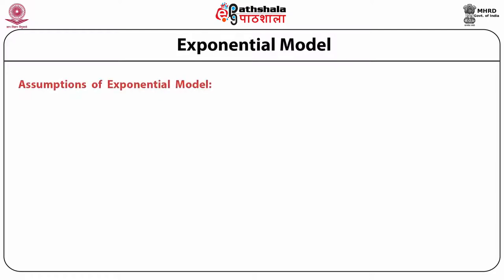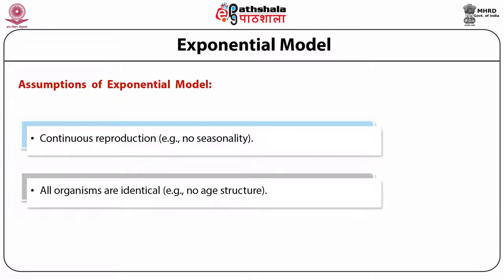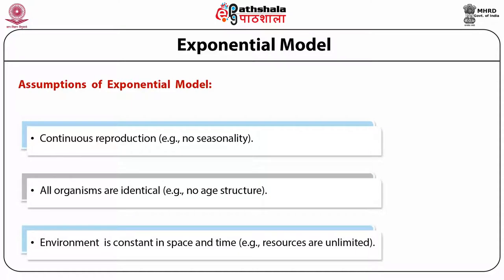The assumptions of this exponential model are: (1) continuous reproduction — that is, there is no seasonality; (2) all organisms are identical — that is, there is no ecological age structure; and (3) the environment is constant in space and time — that is, resources are unlimited.